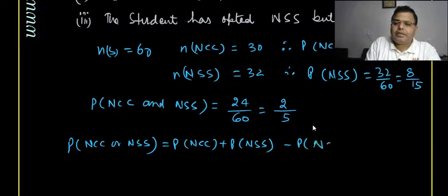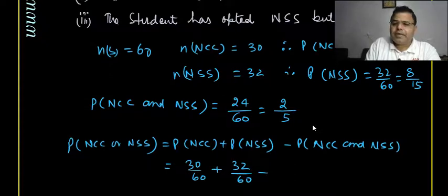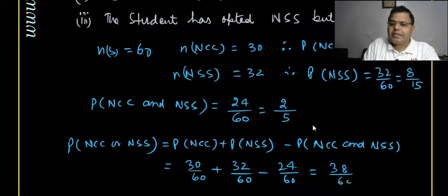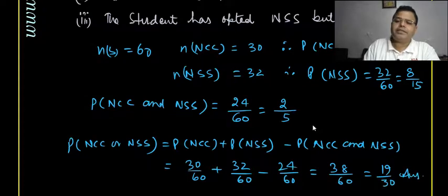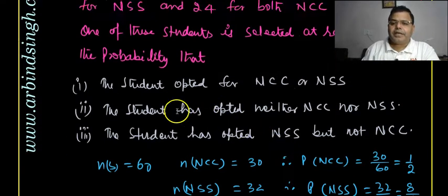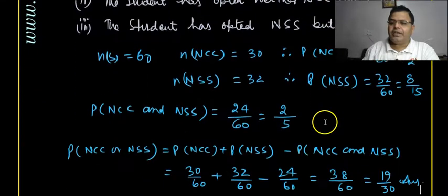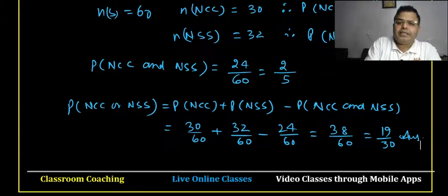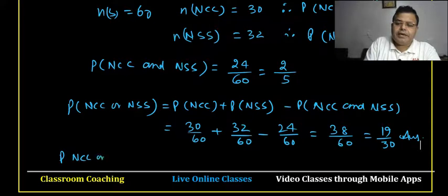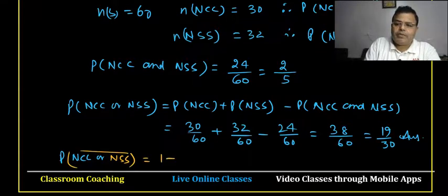The second part: find the probability a student opted for neither NCC nor NSS. This is the complement of P(NCC ∪ NSS) = 1 − 19/30 = 11/30.